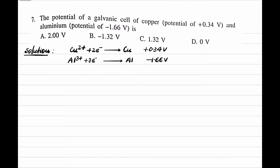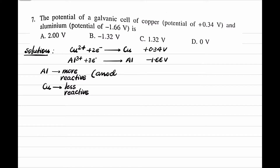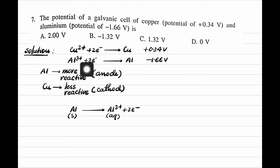In a galvanic cell of copper and aluminium, aluminium is more reactive because it is higher in the electrochemical series, so it will form the anode while copper forms the cathode. Aluminium undergoes oxidation: Al → Al³⁺ + 3e⁻. This is the reverse of the SRP, so its value is +1.66 volt.